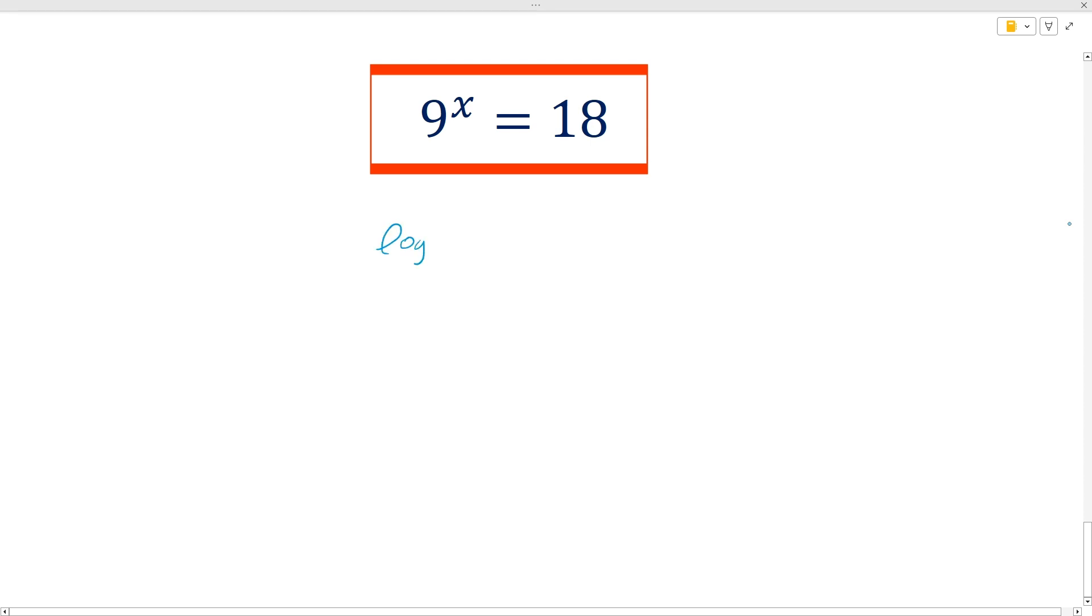What we do first is we log both sides, so we'll say log of 9 to the x is equal to log of 18. And then we can drop the x in front because when you have log of a to the x, you can say it's x log a. So we're using this rule here where we can drop the power in front.